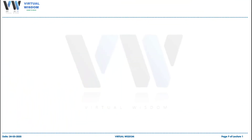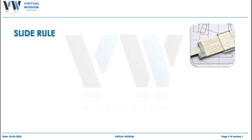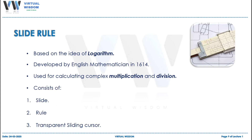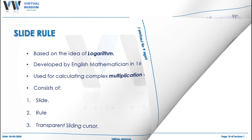Today, IBM was the tabulating machine company founded by Hermann Hollerith. A device which can solve problems involving complex multiplications and divisions was invented in 1614. This device is called the slide rule and it was based on the idea of logarithm. It consists of a transparent sliding cursor and a ruler which had digits. It was replaced by a pocket calculator in the early 1970s.